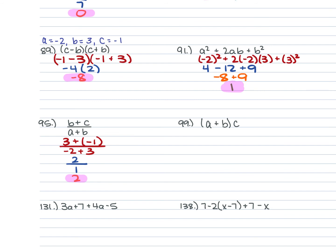For 99, we have (A + B) × C, with A = −2, B = 3, C = −1. So (−2 + 3) × (−1) = 1 × (−1) = −1.